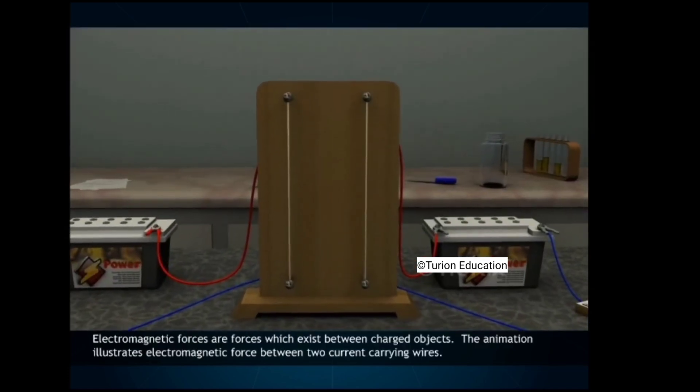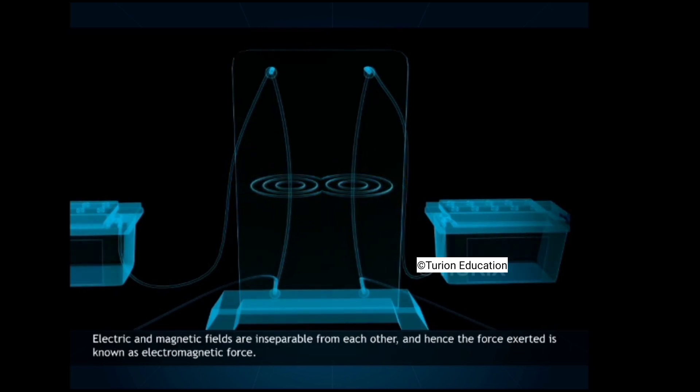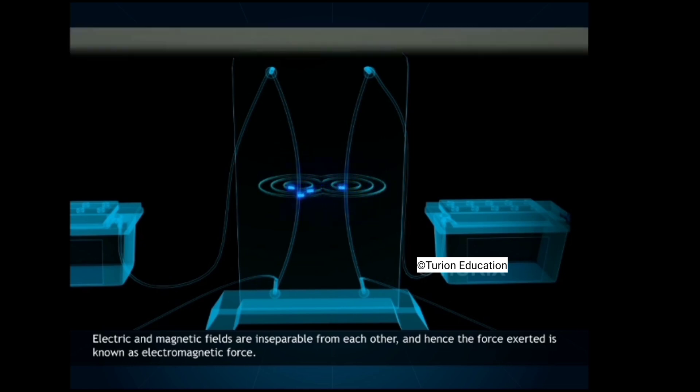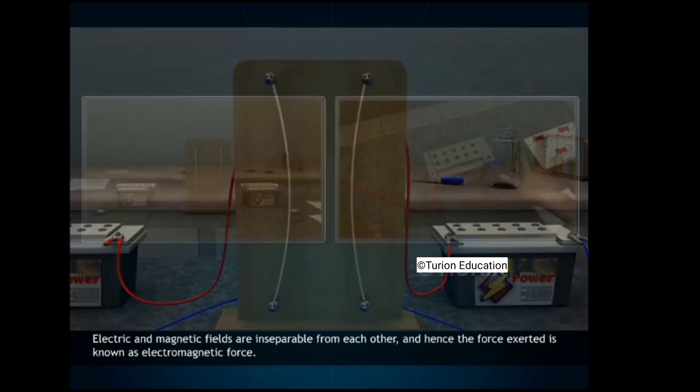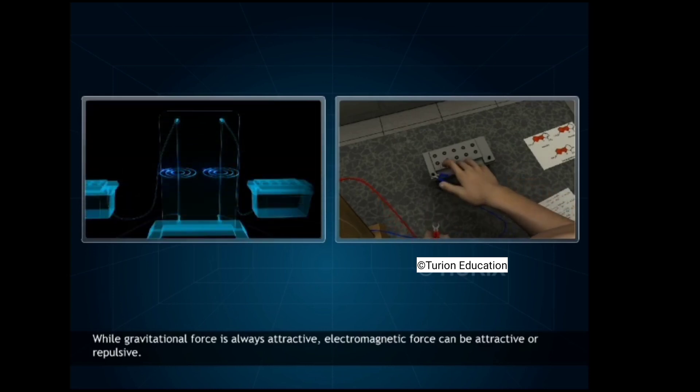Electromagnetic forces are forces which exist between charged objects. The animation illustrates electromagnetic force between two current-carrying wires. Electric and magnetic fields are inseparable from each other. And hence, the force exerted is known as electromagnetic force. While gravitational force is always attractive, electromagnetic force can be attractive or repulsive.